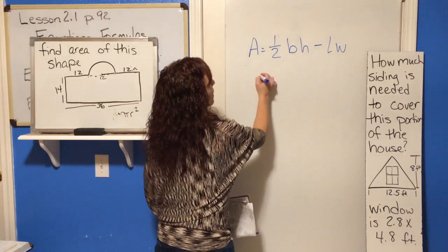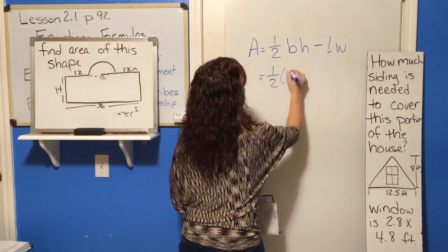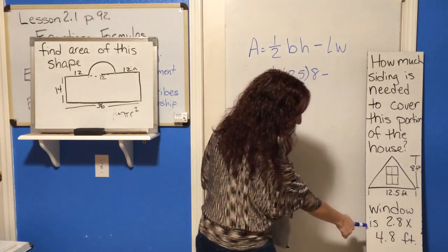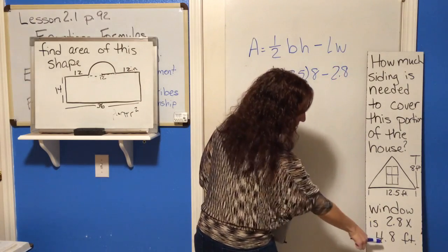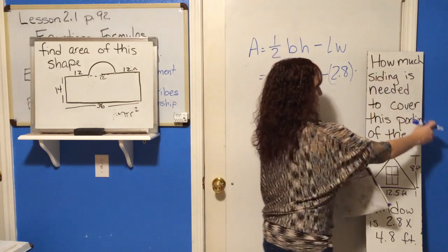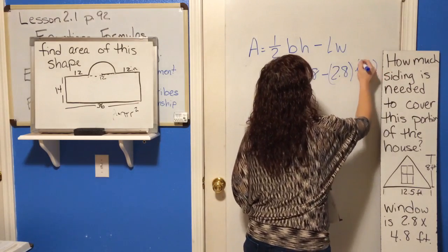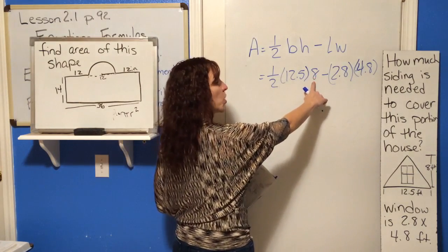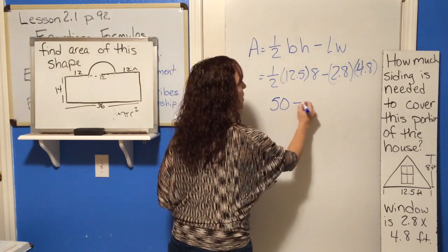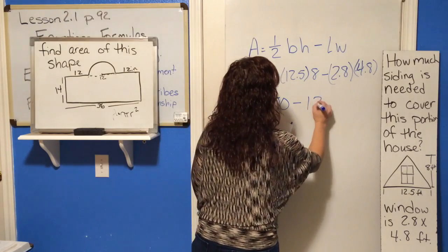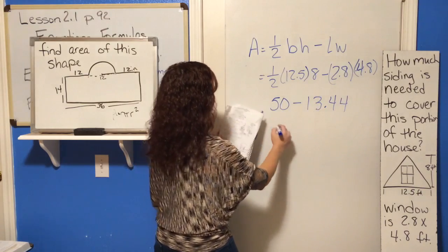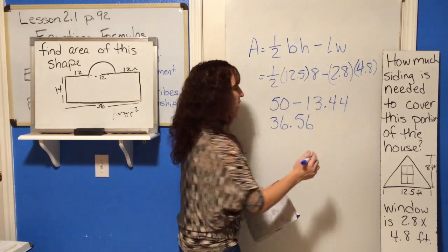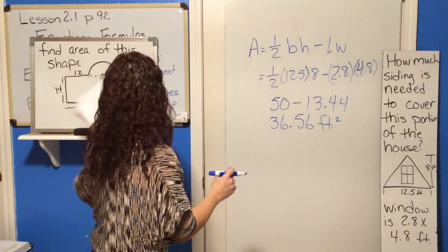All right. So now you just plug in the numbers that you know. So area equals one half times your base is 12.5 times your height is 8 minus the length of the window. Oh, oh, here it is. The window is 2.8 by 4.8. Times 4.8. I have to move this over further. Oh, I hope that's still in. All right. So when you whipped out your handy dandy calculator. So one half of 8 is 4. And 4 times 12.5 is 50. Minus 2.8 times 4.8 is 13.44. And then when you subtract 50 minus 13.44, you should end up with 36.56. And these are in feet. So my answer, because it's area, is feet squared.